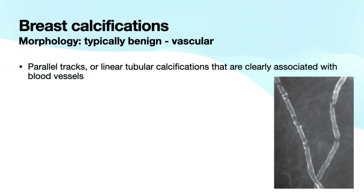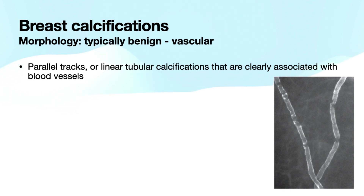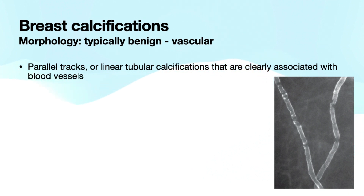Vascular calcifications are another typically benign appearance. These parallel tracks or linear tubular calcifications are clearly associated with blood vessels. When they are evolved to the point shown in this example, this is not a diagnostic dilemma. However, in early vascular deposition it can be a little tricky — you can feel like it's probably a vascular calcification but you're not quite certain yet. Although it's not a BIRADS manual sanctioned use of BI-RADS 3, a relatively common use of BR3 is presumed evolving vascular calcifications. Often six or twelve months later you can confirm these are indeed vascular and end the patient's follow-up protocol.